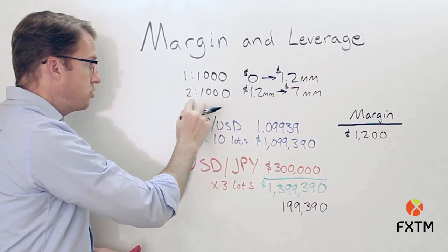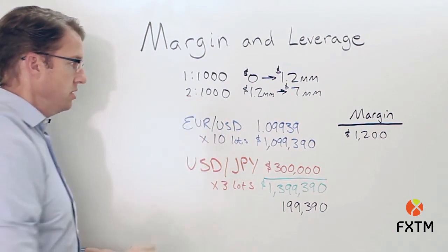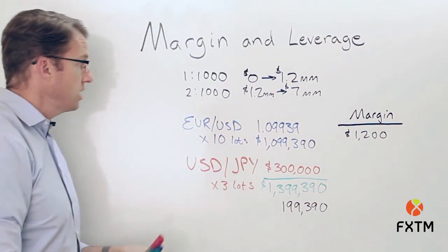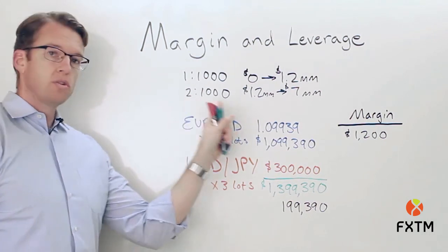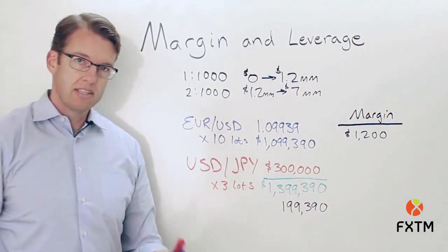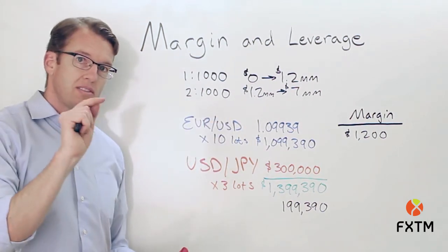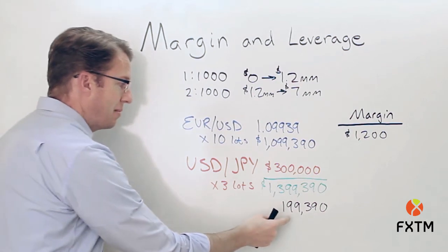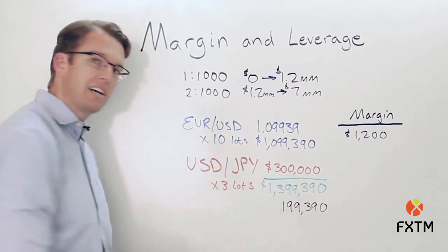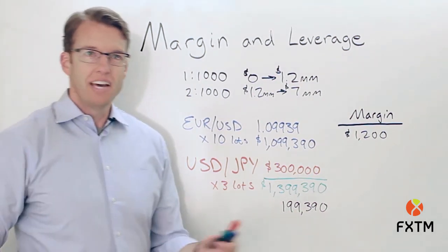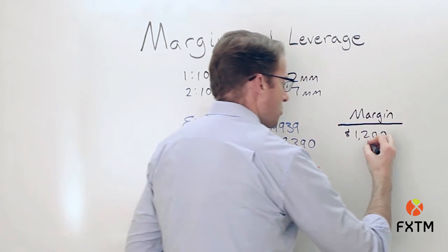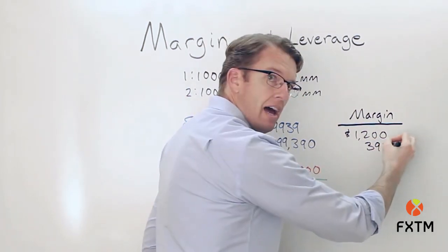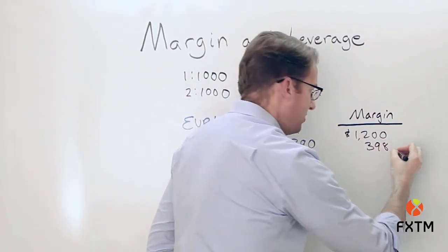We actually have a leftover amount of $199,390, which falls into the category between 1.2 million and 7 million dollars with a leverage ratio of 2 to 1,000. Taking 2 divided by 1,000 gives us 0.002. Multiplying that by the remaining notional value of $199,390 gives us an amount of $398.78.